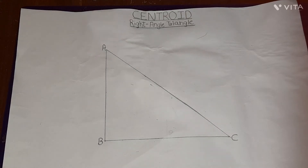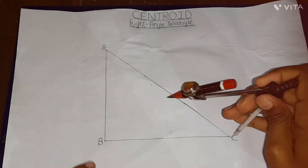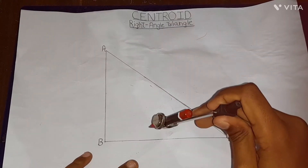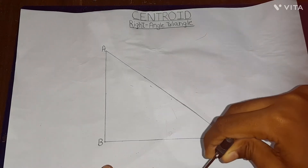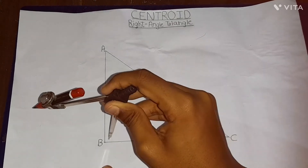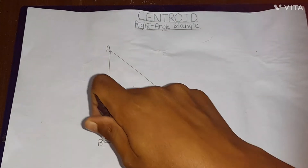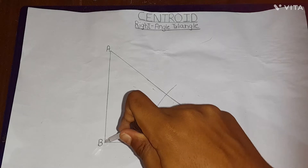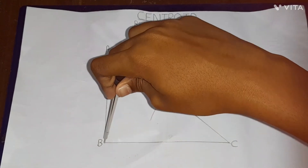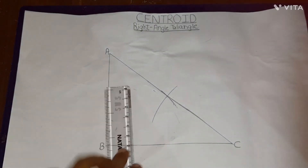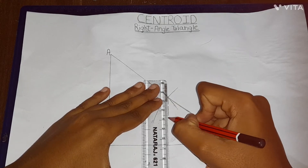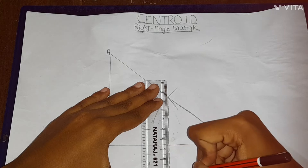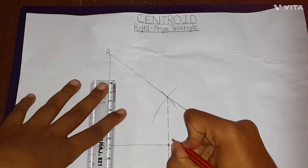Now let's construct the centroid of a right-angled triangle. The method is totally the same. First we have to find the midpoints of all the sides. Let's find the midpoint of BC first. We will keep the compass needle on C. This compass span seems more than half of BC. So we will make two arcs. With the same span, we will keep the compass needle on B and cut these two arcs. When we join these two, we will get the midpoint of BC. This is the midpoint of BC. We will name it as P.